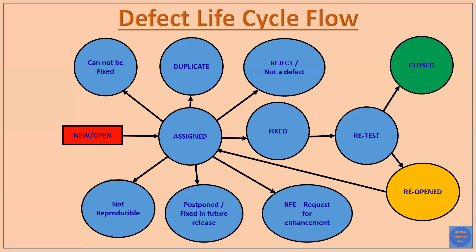The second scenario is when a new bug is assigned to the developer and the developer finds that the same bug has already been logged by someone else — either another tester or possibly the same tester. In that case, the developer marks the bug as 'Duplicate'.